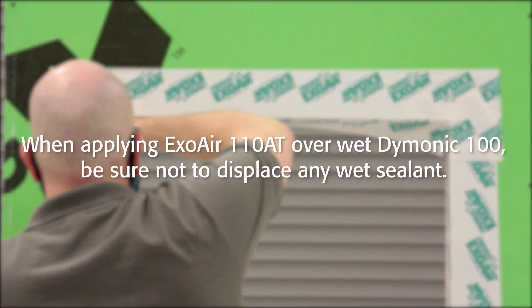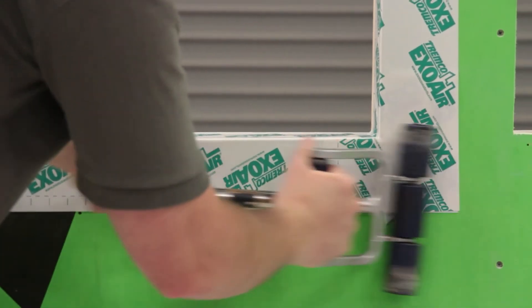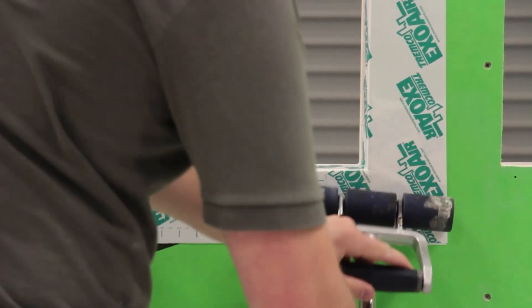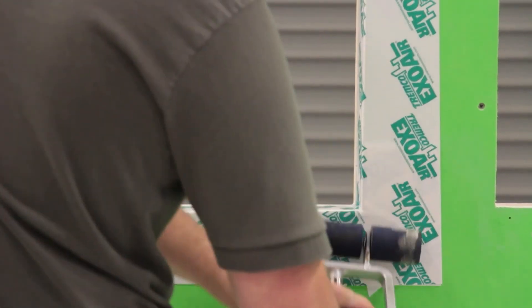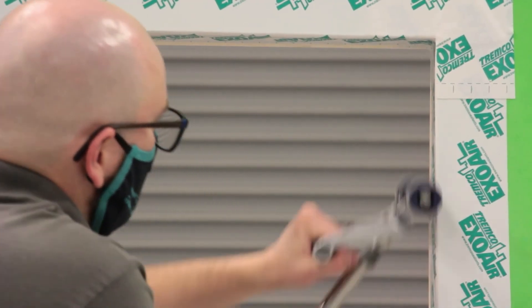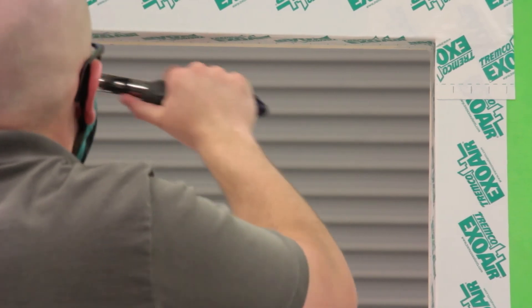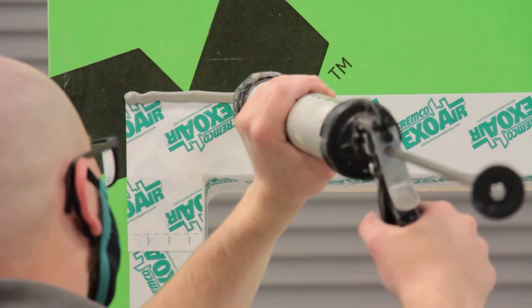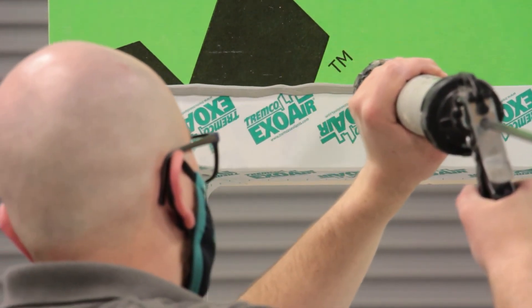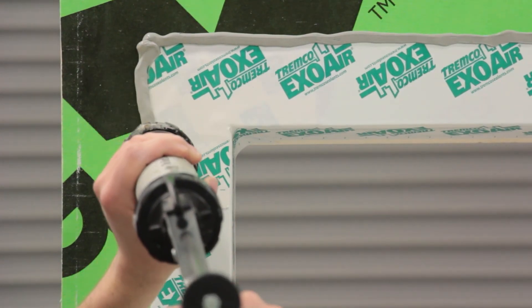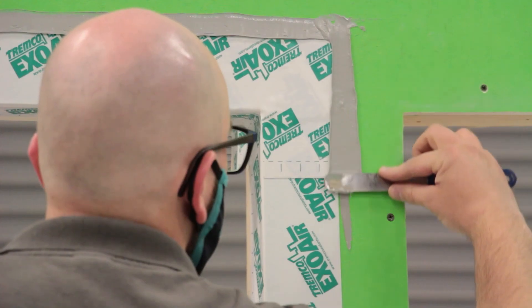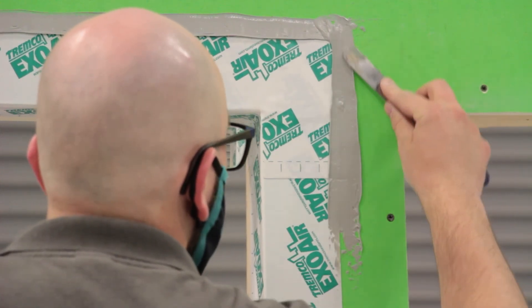In this instance, care should be taken not to displace any wet sealant. Use a roller along the entire length of the applied product to ensure proper adhesion and to remove any air bubbles or fish mouths. Detail the top edge with Dymonic 100 and extend down each jam a minimum of 6 inches. Be sure to tool and feather the edges of sealant to shed water.